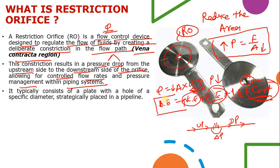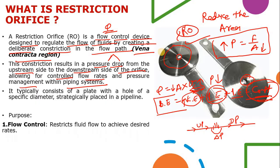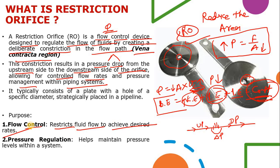The restriction orifice typically consists of a plate with a hole of a specific diameter strategically placed in a pipeline. The hole diameter is based on process parameters and process conditions. Its two main purposes are: first, flow control — it restricts fluid flow to achieve desired flow rates; and second, pressure regulation — it helps maintain pressure levels within the system by creating a delta P between upstream and downstream.